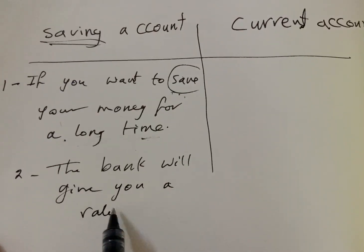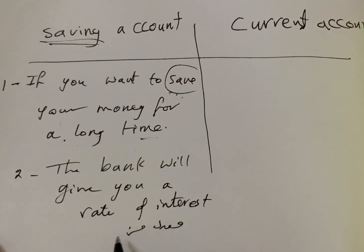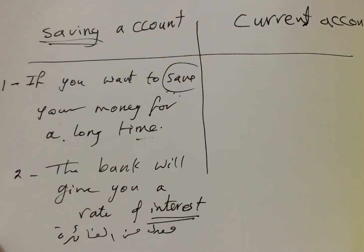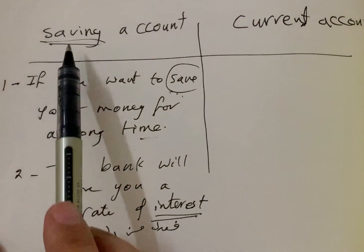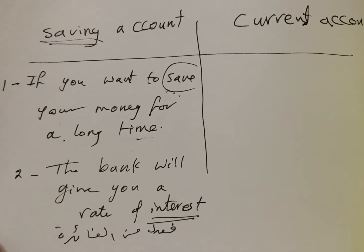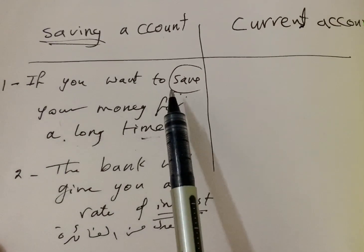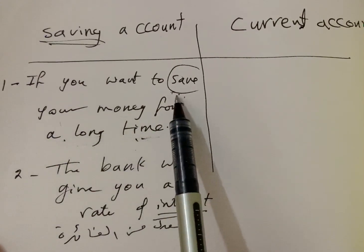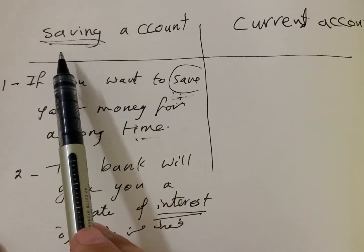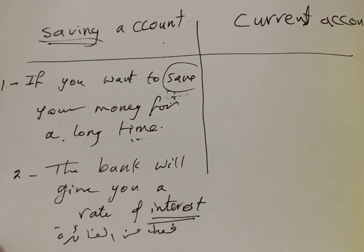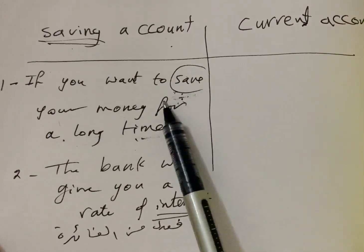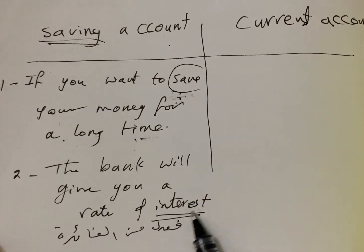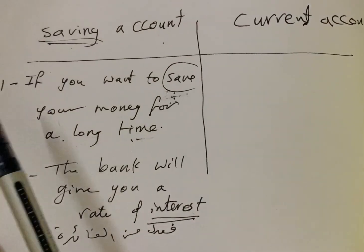فائدة. When will you get interest? متى ستحصل على فائدة؟ If you open a Saving Account. Which account should you get if you want to save your money for a long time? إذا أردت تدخر نقودك لفترة طويلة، رح تقول: I should get a Saving Account. إذن حساب التوفير: save your money for a long time وتحصل على فائدة — هاتان النقطتان تُحفظان.